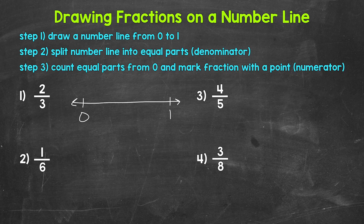Two-thirds is part of a whole — we have a fraction. So two-thirds is going to be somewhere in between zero and one. The next thing we need to do is divide the number line — the distance between zero and one — into equal parts. Our denominator tells us how many total equal parts we need. Our denominator is three, so we need three equal parts: one, two, three.